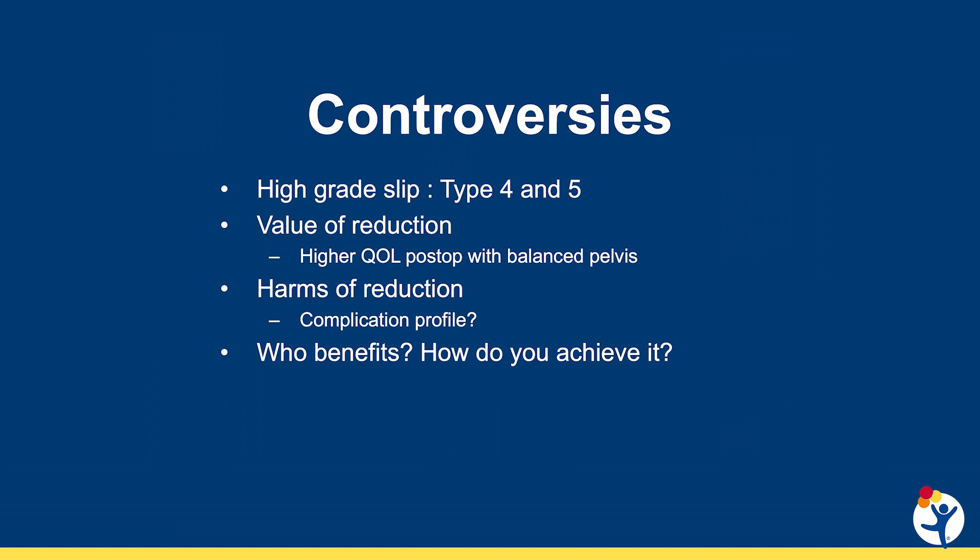The current controversies lie in how to best treat type 4 and type 5 spondylolisthesis. We know that low-grade spondylolisthesis — types 1 to 3 — rarely needs surgery. We also know that someone who is globally out of balance is not going to do well unless sagittal balance is restored, so the type 6 patient needs to have their C7 plumb line brought back to better global balance.